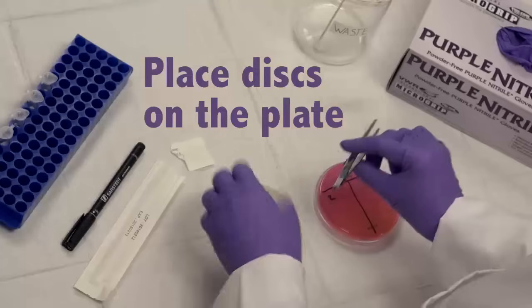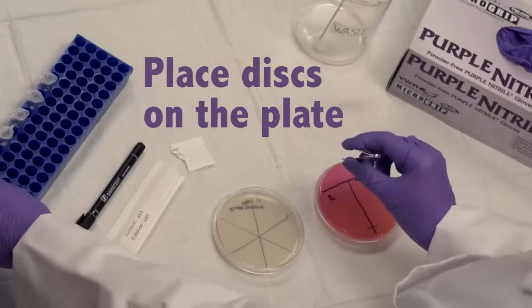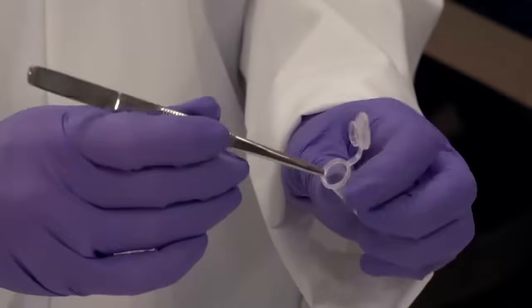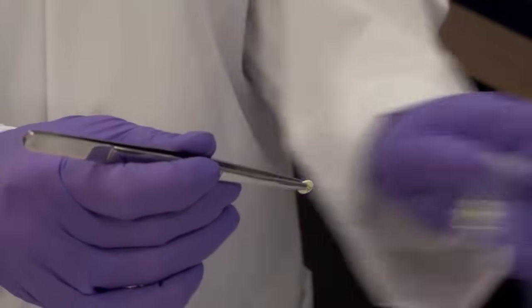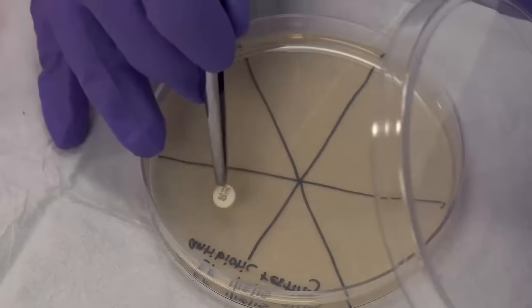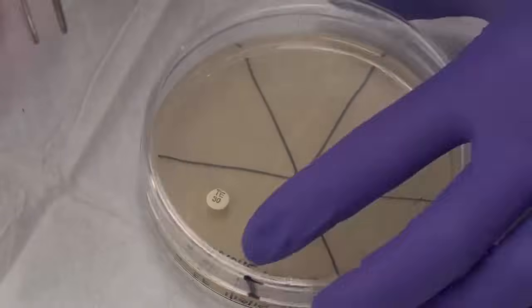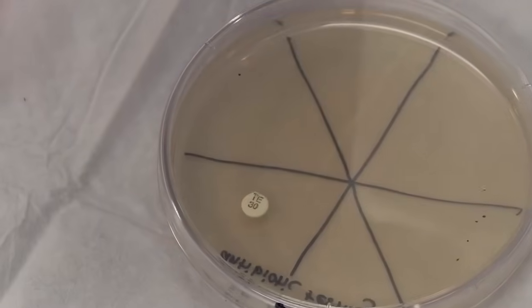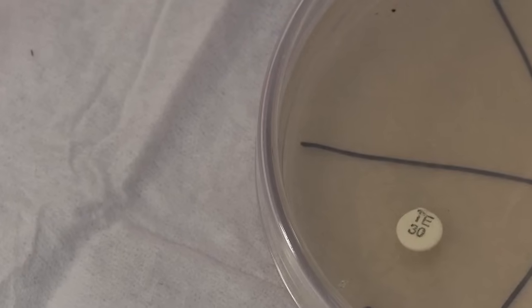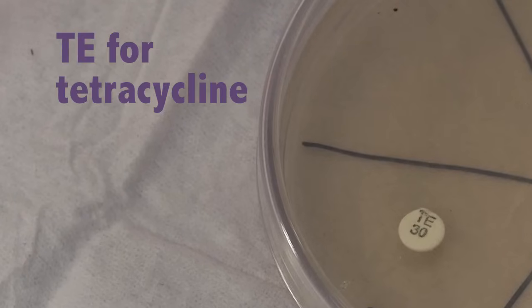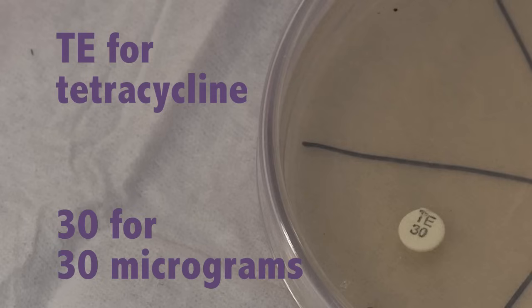Use the tweezers to get one antibiotic disc and place it in its own section of the plate. Gently tap the disc to stick it to the agar. The letters TE are an abbreviation of the antibiotic's full name. In this case, TE stands for tetracycline. And the numbers tell us the concentration of the antibiotic on the disc, 30 for 30 micrograms.